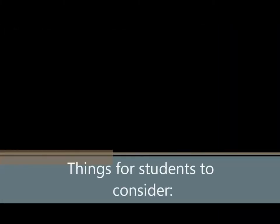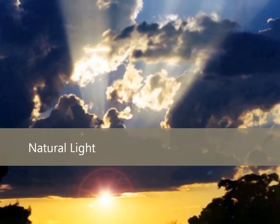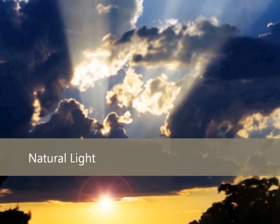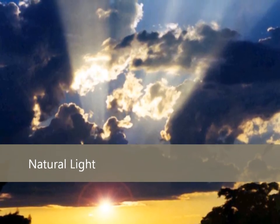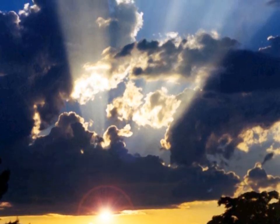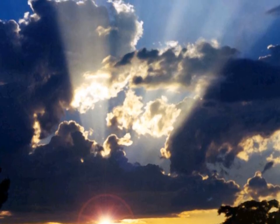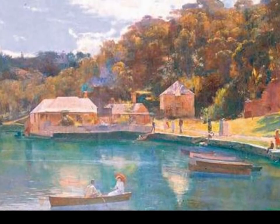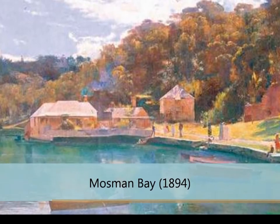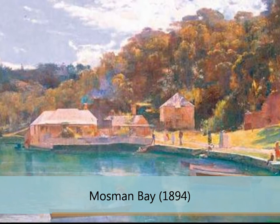Some things students should be asked to consider when completing their artworks could include the effect of natural light on what they are looking at. For example, do the sunlight or shadows have an effect on the colours of the trees or plants which the students are painting? When painting en plein air, Tom Roberts was known to convey the time of day at which he was painting onto his artwork using the effects of natural light.